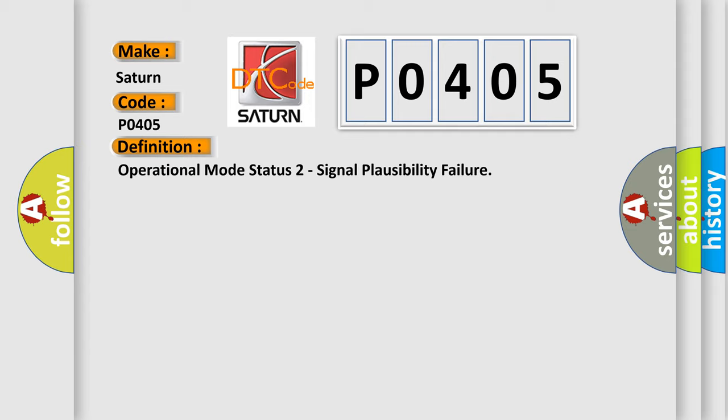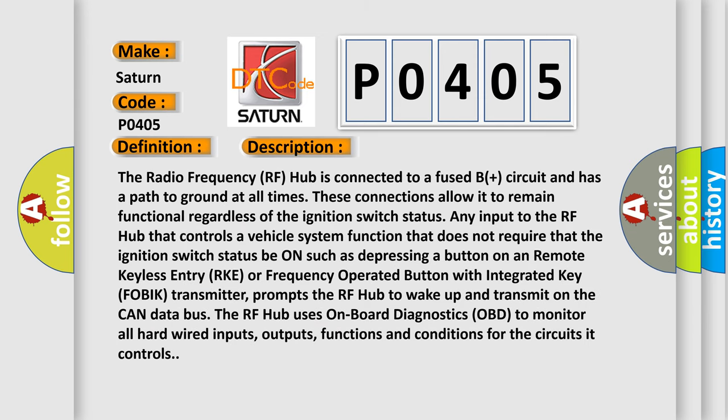Here is a short description of this DTC code. The radio frequency RF hub is connected to a fused B+ circuit and has a path to ground at all times. These connections allow it to remain functional regardless of the ignition switch status. Any input to the RF hub that controls a vehicle system function that does not require the ignition switch to be on — such as depressing a button on a remote keyless entry (RKE) or frequency operated button with integrated key (FOBIK) transmitter — prompts the RF hub to wake up and transmit on the CAN data bus. The RF hub uses onboard diagnostics (OBD) to monitor all hardwired inputs, outputs, functions, and conditions for the circuits it controls.